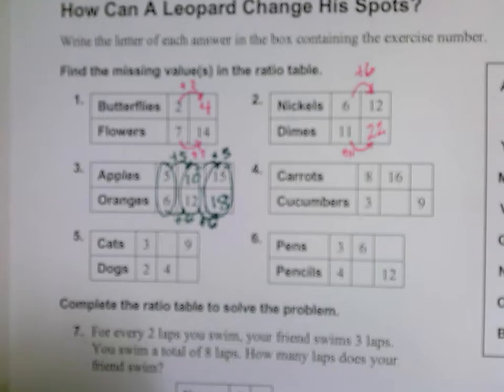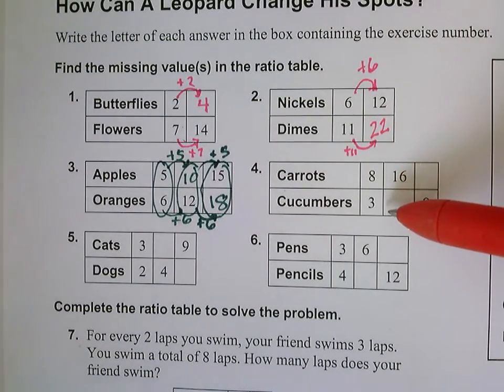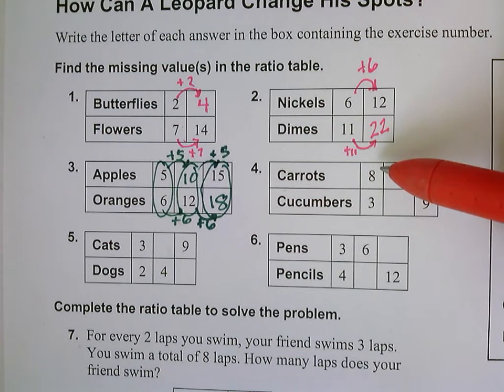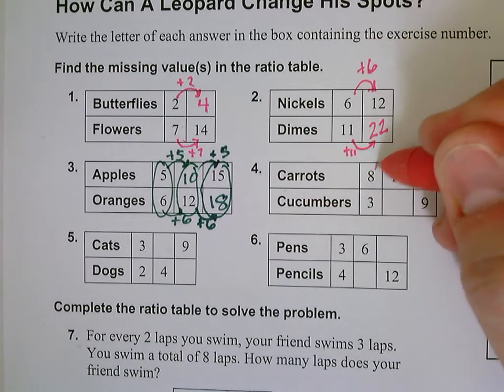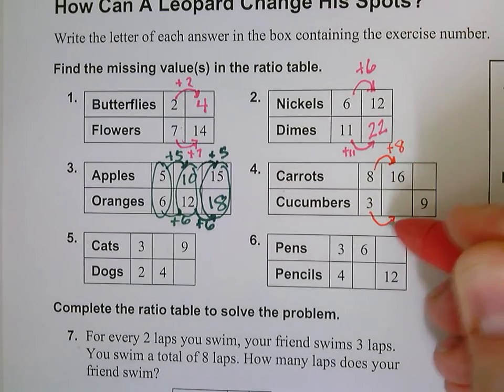Let's try one more example. Here I have 8 carrots to every 3 cucumbers. I'm going from 8 to 16. I'm going to add another group of 8 here, and down here I'm going to add another group of 3.